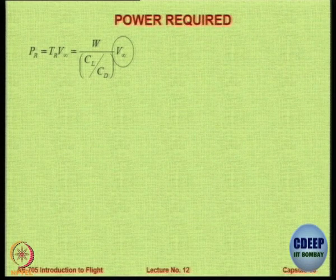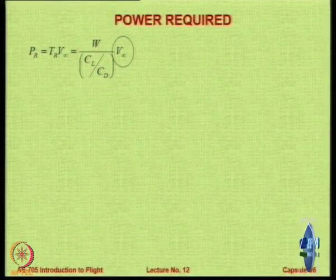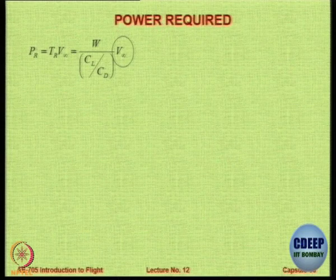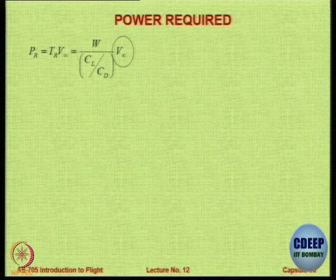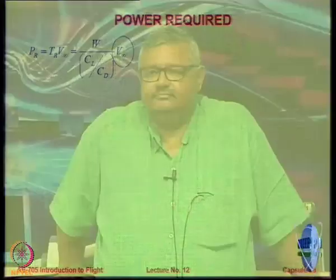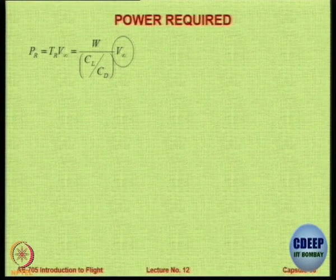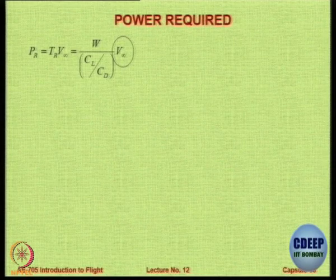Can you derive an expression for V∞ in terms of W for level flight? Please copy down this expression first: Pr equals Tr into V∞, which equals W upon (CL/CD) into V∞. V∞ now has to be replaced by an expression that incorporates W and CL for level flight. For steady level flight, what is V∞ equal to?